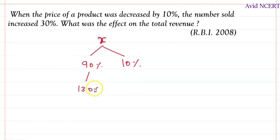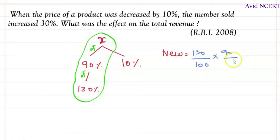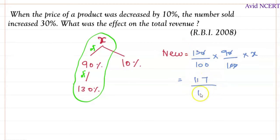So the new revenue equals 130 percent of 90 percent of X, which is 130 by 100 times 90 by 100 times X. Simplifying this — the zeros get cancelled — which equals 9 times 13 which is 117, divided by 100, times X.